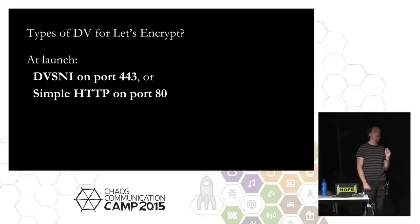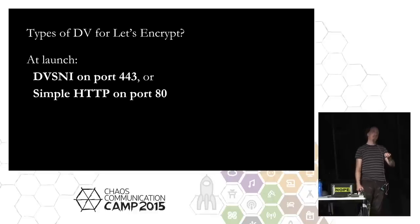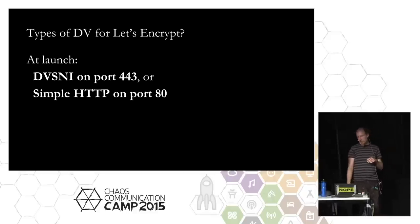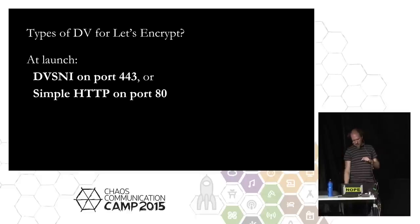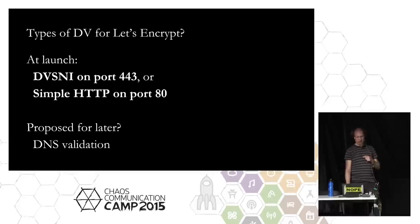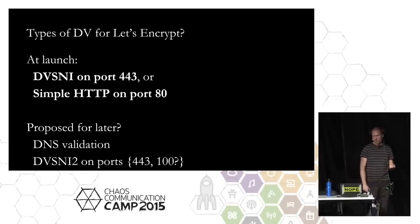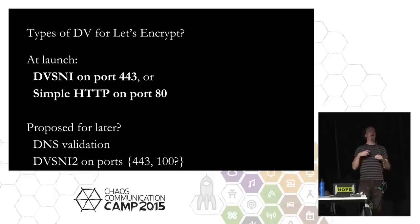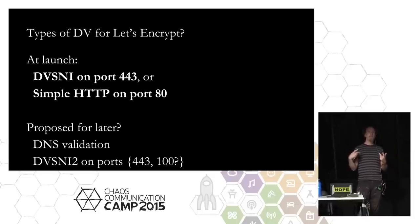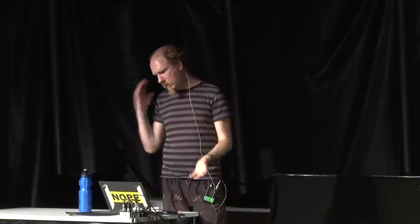We will also do simple HTTP validation, which is a little bit less secure but possibly easier for some people to deploy, particularly behind proxies and CDN layers, so you can put up that nonce over HTTP. And then proposed for later, we're thinking about DNS-based validation, which is very useful for large infrastructure deployments. And then a variant of DVSNI where you are asked to prove control of maybe 100 or 1,000 names at once, and we actually only check five or six of them randomly — so if you have a machine with 1,000 virtual hosts, rather than making 1,000 TCP connections, we do a statistical verification.